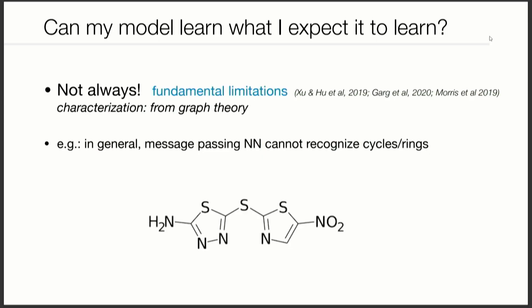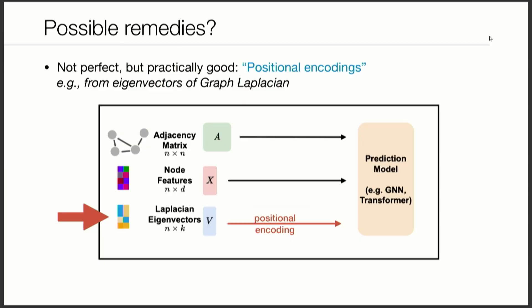To make this concrete, let me give you one example. These architectures cannot recognize cycles in a graph. Look at this molecule — the network cannot actually know that there's a ring in this molecule, which may be very important for understanding its functionality. One practical remedy is to tell the neural network more about the location of each node in the graph, feeding that as extra information.